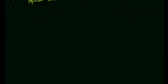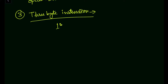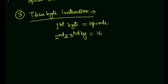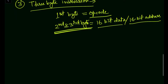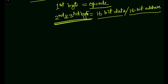Now let us move to the third type: the three-byte instruction. In a three-byte instruction, the first byte is the opcode or operation code. The second and third bytes together represent 16-bit data or a 16-bit address. Note that in the 8085, addresses are represented in 16 bits. The first byte is the opcode and the second and third bytes carry the 16-bit data or address.